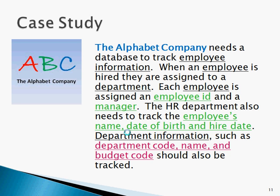First, we need to identify the data that needs to be tracked. When looking for attributes, focus on identifying the nouns. All the nouns in the paragraph have an underline. Now let's go through them to see which ones qualify as fields or attributes of our entities or themes. The Alphabet company is who the database is being created for, not what we are tracking. Employee information is too broad to use as a field — we need more specific values, which is what follows in the rest of the paragraph. Employee and department are our big ideas or themes that we want to track, so they are actually our entities and not the attributes.